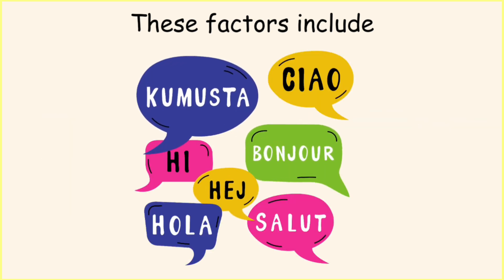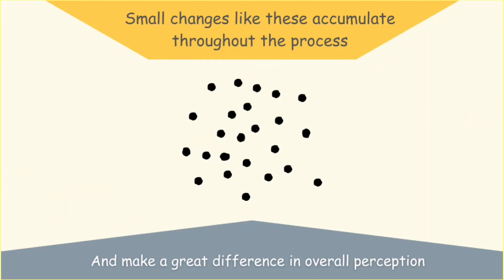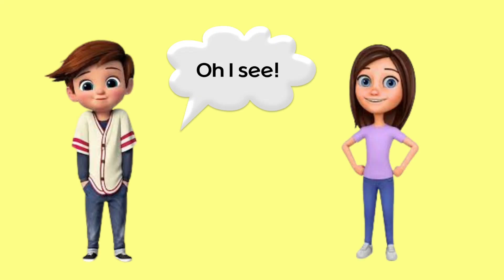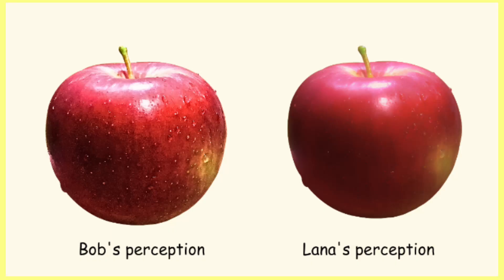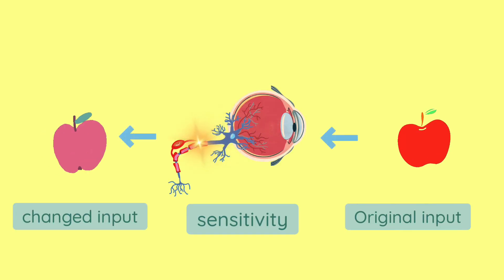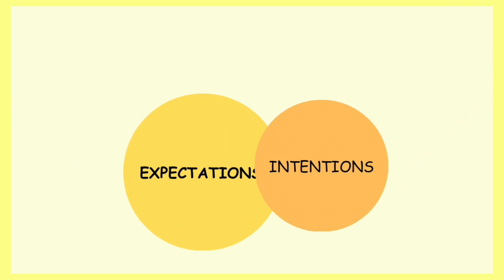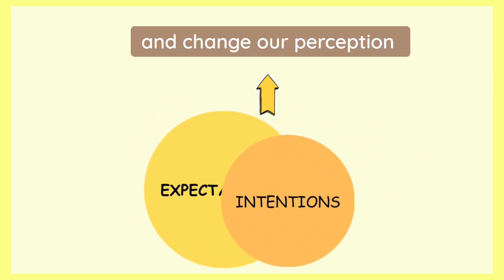Mind-blowing, isn't it? Now, all of these minor alterations ultimately add up to produce significantly different perceptions of the same color, the way they did with Bob and Lena. A similar thing happened with their perceptions of the texture of the apple too. Bob's touch receptors are extremely sensitive, which is why the tiniest bumps and grooves on the apple were way more apparent to him than to Lena. This means factors like sensitivity can alter the sensory input relayed to our brain — but that's not all. During interpretation, even our expectations and intentions jump in to alter our perception.